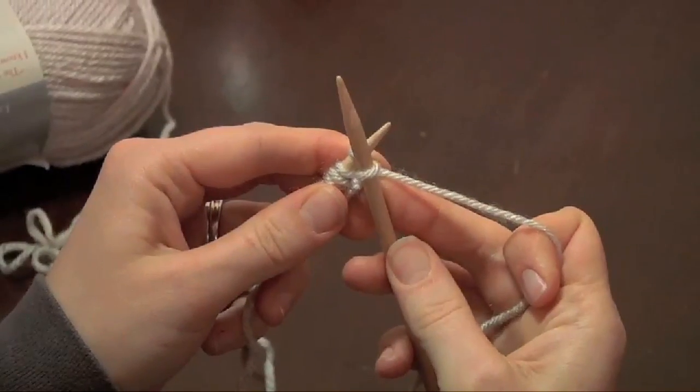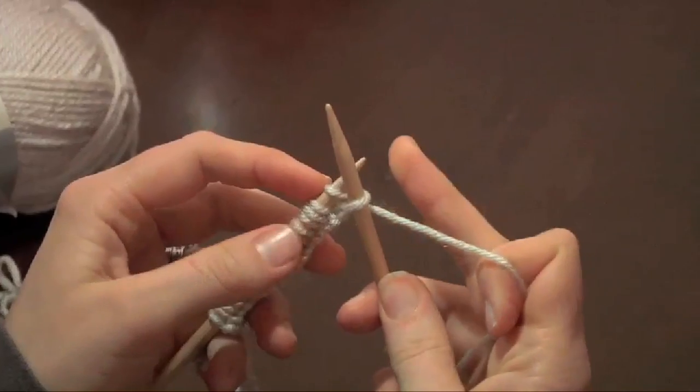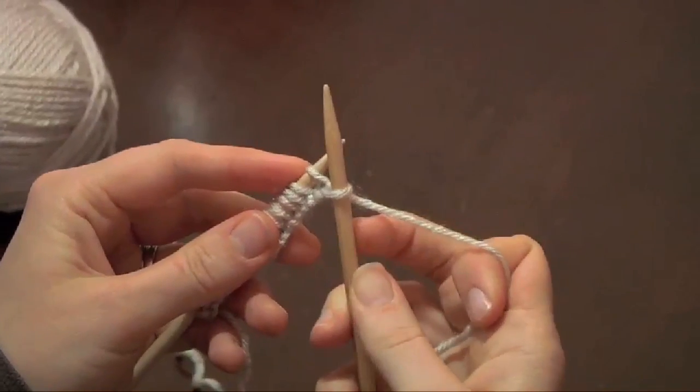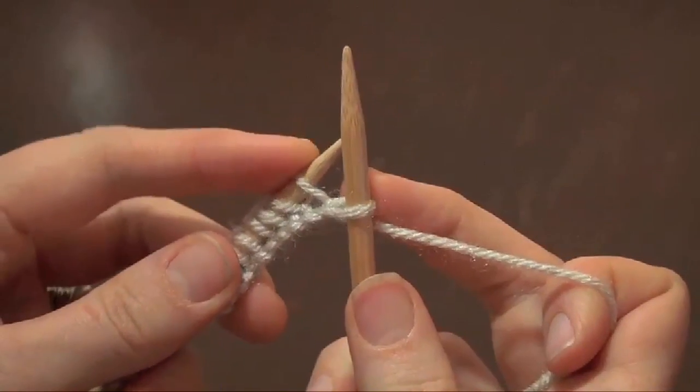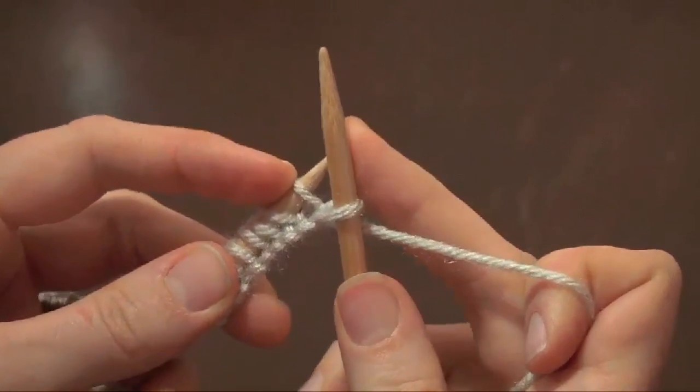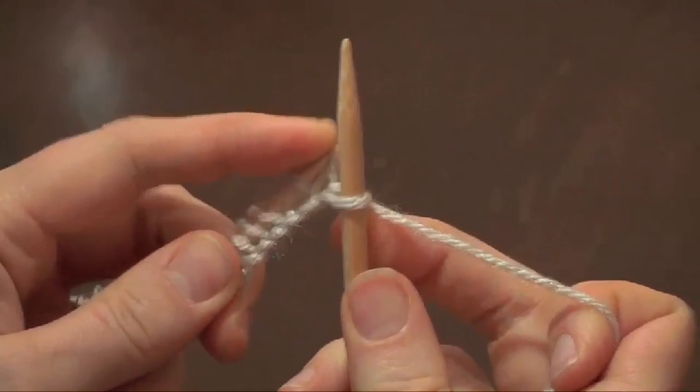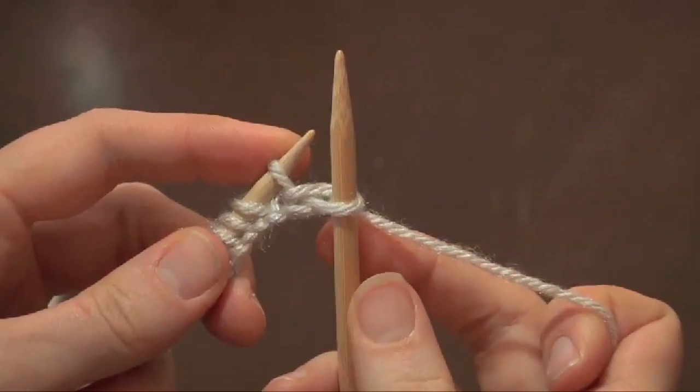Now the difference with the knit stitch versus the casting on is you're not going to slide the loop off the right hand needle and onto the left. Instead, you're going to take this loop on your left hand needle, and you're going to slide it off the needle. That is your first knit stitch.